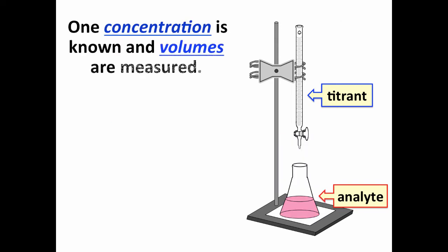When we do a titration, we typically know one concentration and measure two volumes. An example would be we know our volume of analyte. We don't know its concentration.